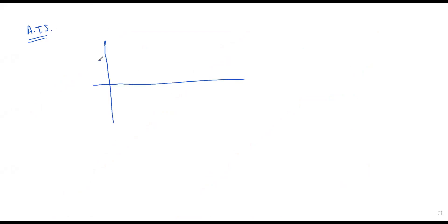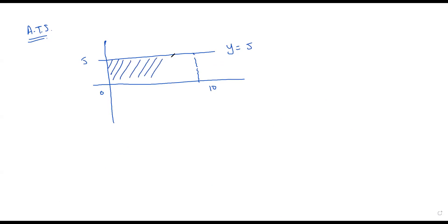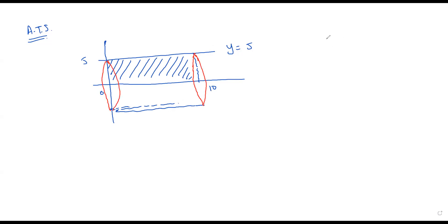Suppose we have a line y = 5, from x = 0 to x = 10. If I revolve this rectangular region about the x-axis, what kind of solid do I get? That will be a cylindrical shape.